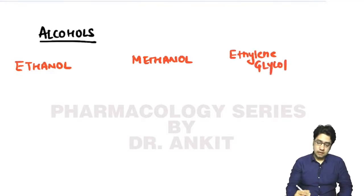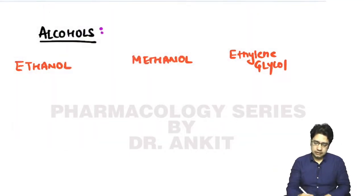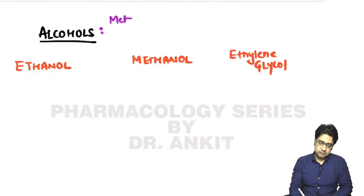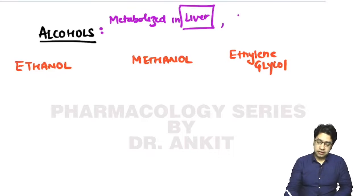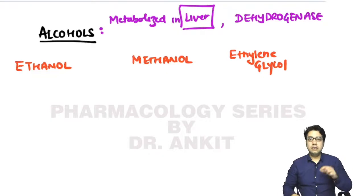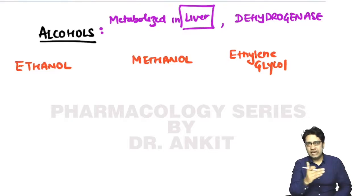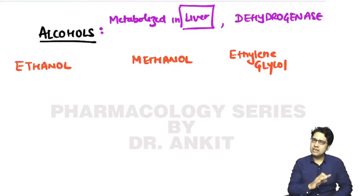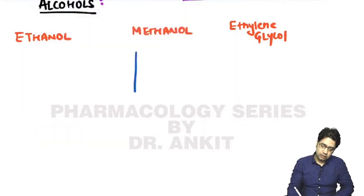The first point is that all alcohols, irrespective of which type they are, are metabolized in our body in the liver. They are metabolized with the help of an enzyme known as dehydrogenase. We don't have any specific dehydrogenase for any specific alcohol - it's the same for everyone.